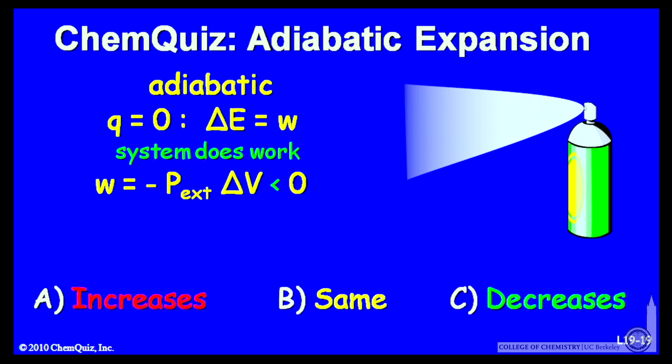So a system doing work, that work with a positive delta V means work is negative.